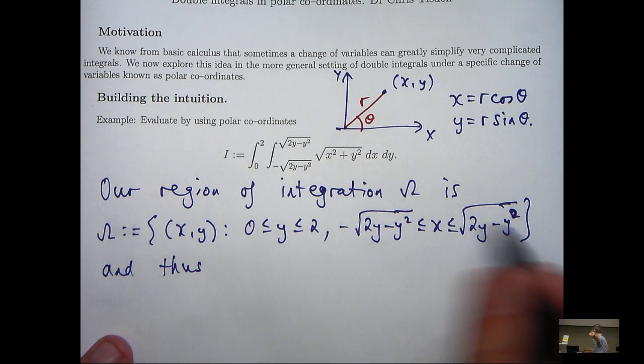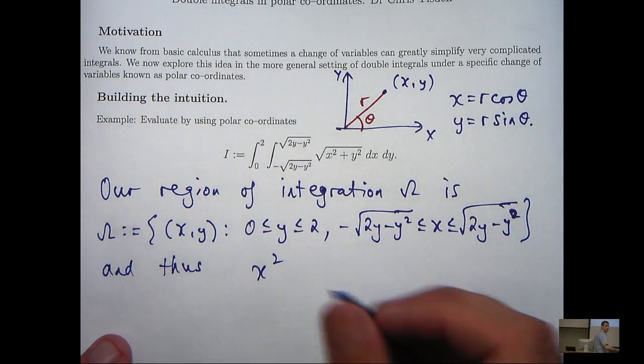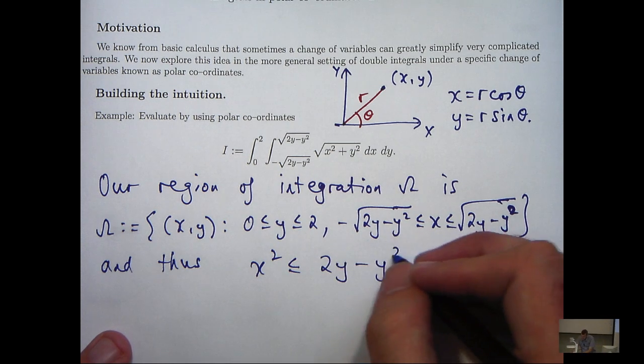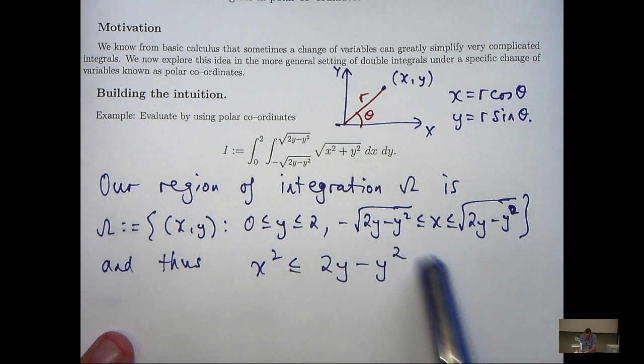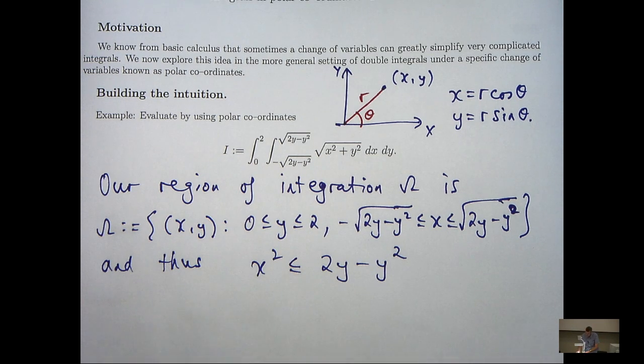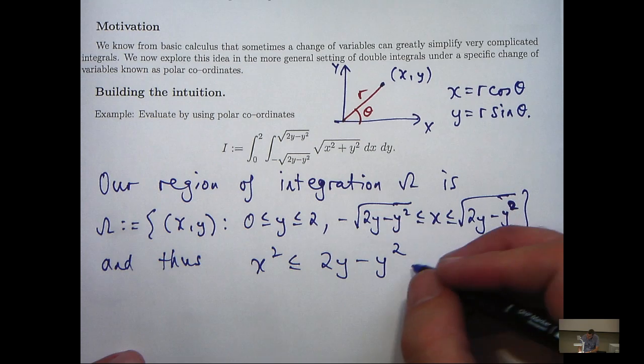So I'm going to work with these inequalities here. So from these two inequalities, I can form the following inequality. And I'm going to work with this and show that actually, geometrically, this inequality represents a disk.